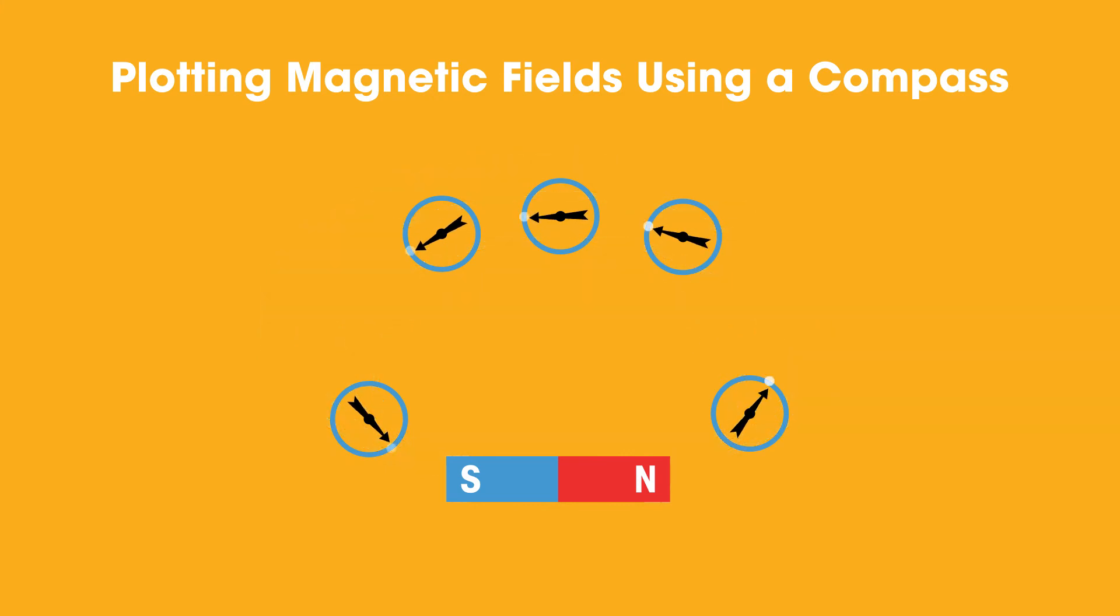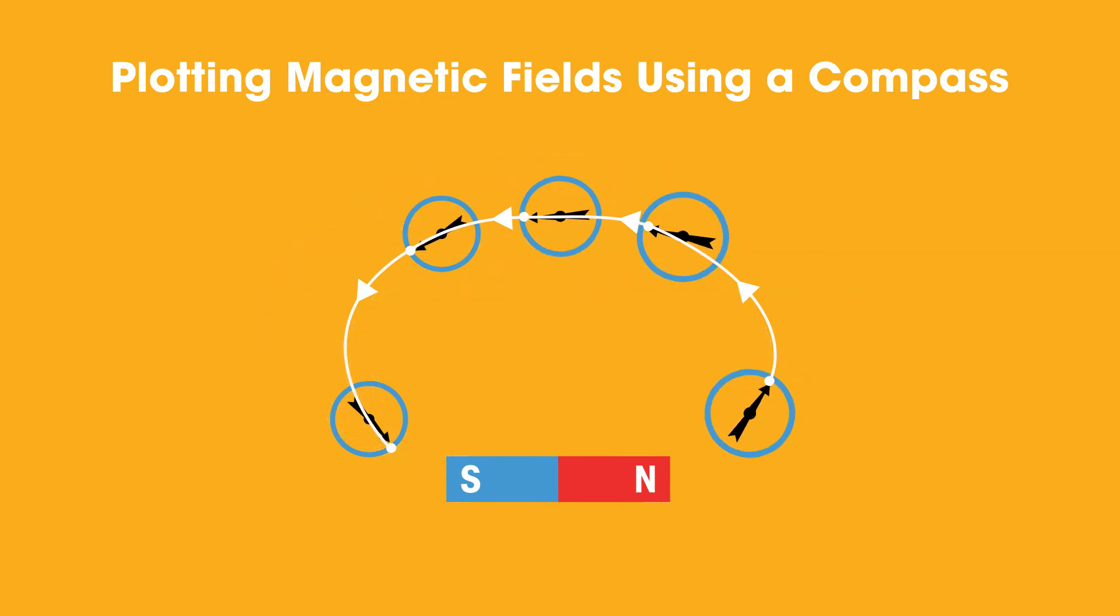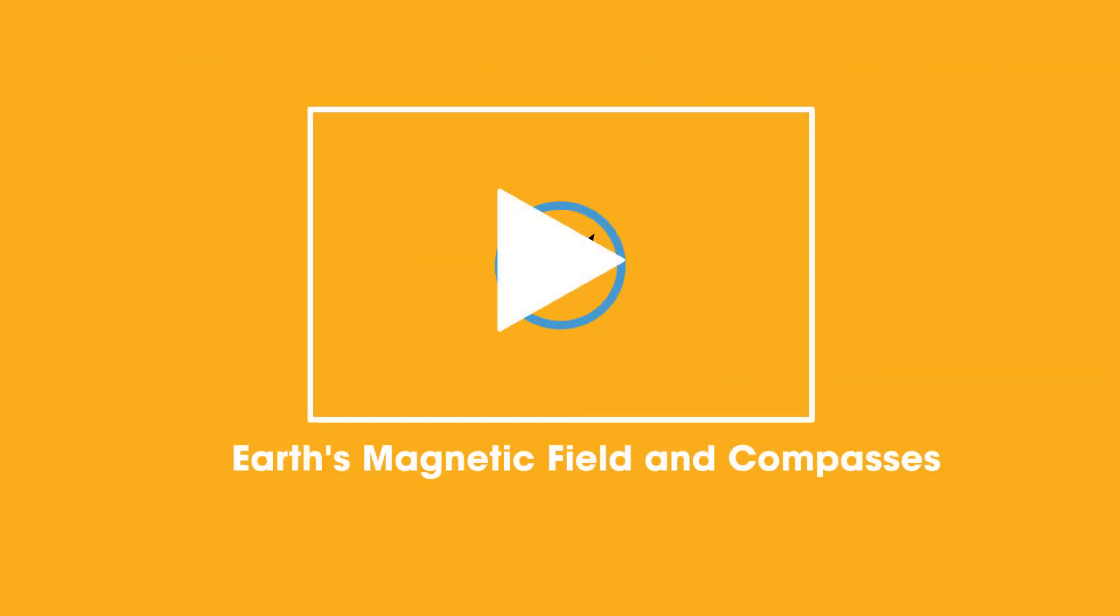Then, using a pencil, draw a dot where each arrow points and connect the dots. The compasses will show the direction of the field lines going from the north pole to the south pole. Simple. We now know the direction of the magnetic fields. We will look at compasses and the earth in another video.